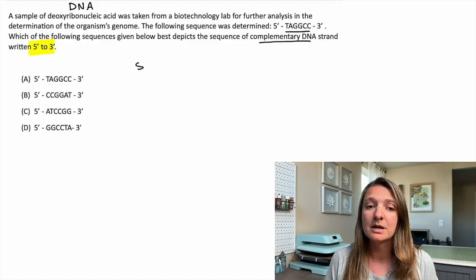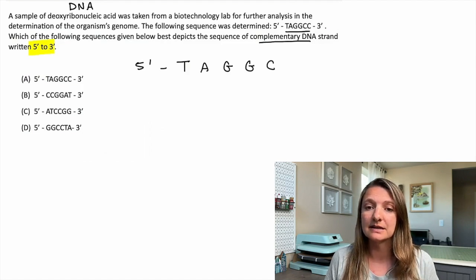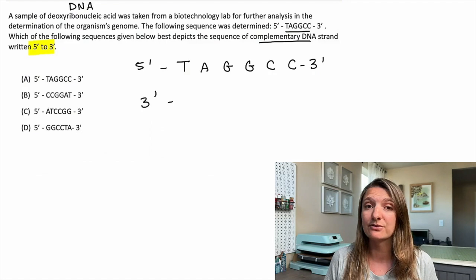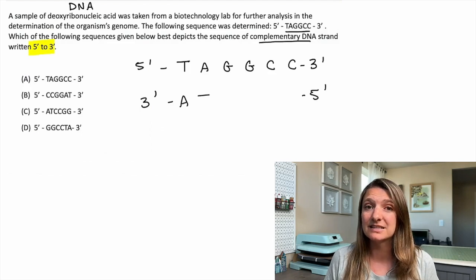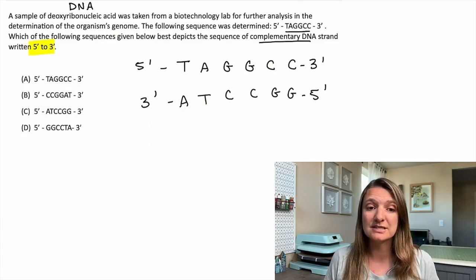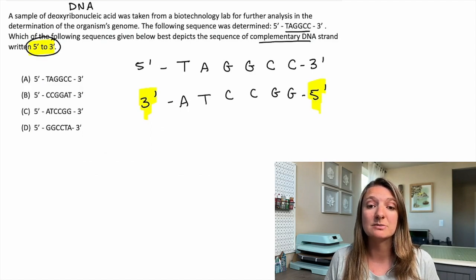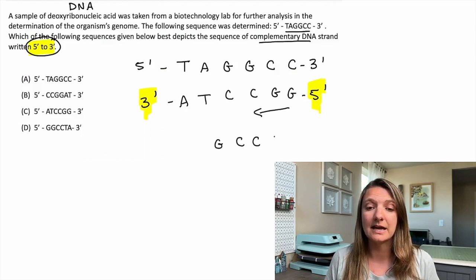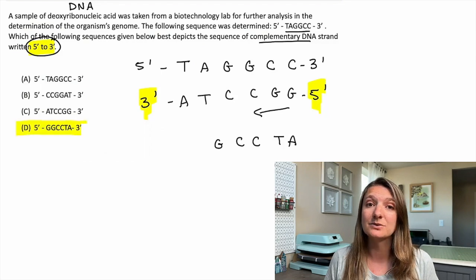This is a little bit of a tricky problem. So let's write that sequence: thymine, adenine, guanine, guanine, cytosine, cytosine — that is five prime to three prime. The complementary strand of DNA is going to be the exact opposite, running three prime to five prime. Thymine bonds to adenine — sticks to sticks and curves to curves — and guanine bonds with cytosine. But remember, we can't just say this is the answer because it's three prime to five prime, and they're asking specifically for five prime to three prime. So it's going to be the exact reverse: GGCCTA. Our answer is D, GGCCTA.